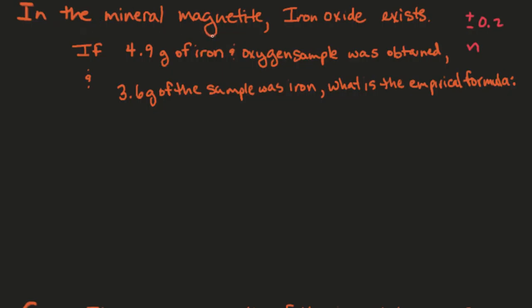So let's see how this works. Here we have an example in which we have the mineral magnetite that has iron oxide within it. If we find 4.9 grams of the sample that has iron and oxygen, and 3.6 grams of that sample was iron, what is the empirical formula?